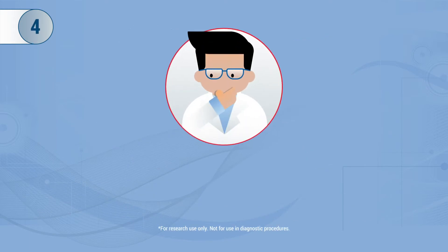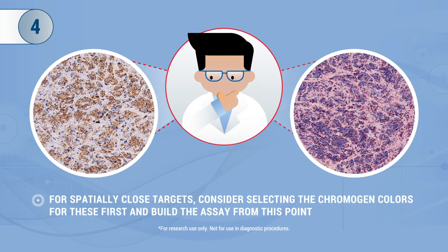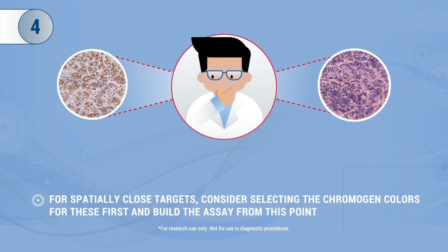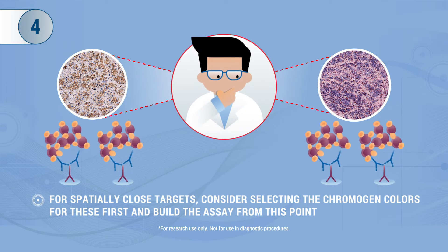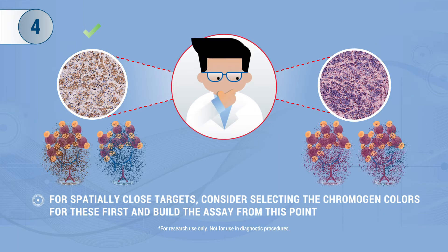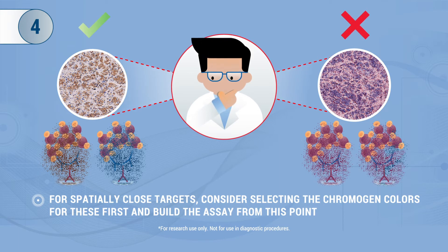Tip 4: For two spatially close targets, consider selecting the chromogen colors for these two markers first. If possible, run these as dual stains prior to the full multiplex panel to select the best color combination. Then address the optimal order for the remaining marker colors.